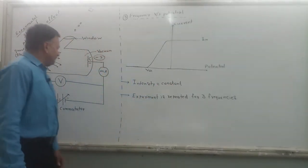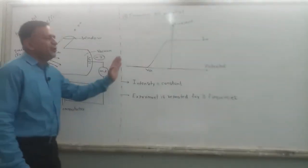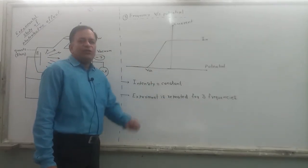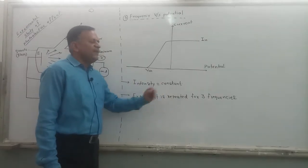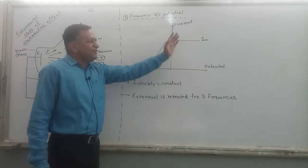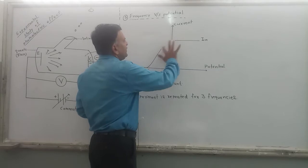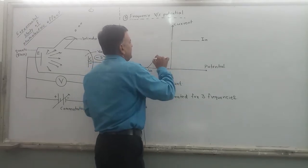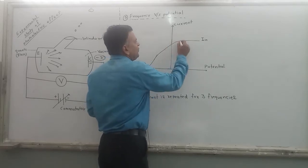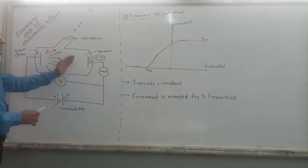The experimental arrangement for this will be similar to the previous one. What we are doing in this procedure is keeping the intensity of light constant. The variation of current with the potential — as you increase the potential, the value of electric current also increases, and then it saturates.